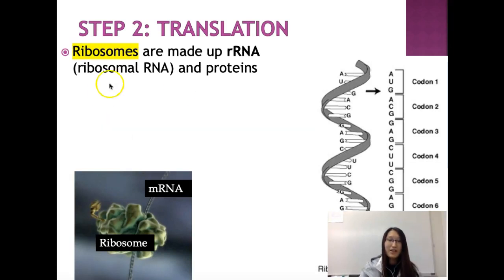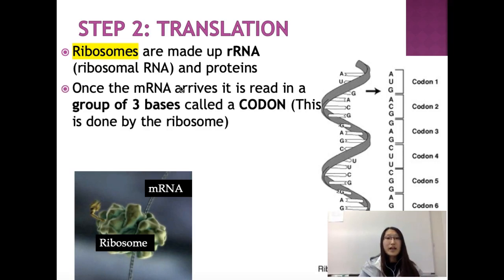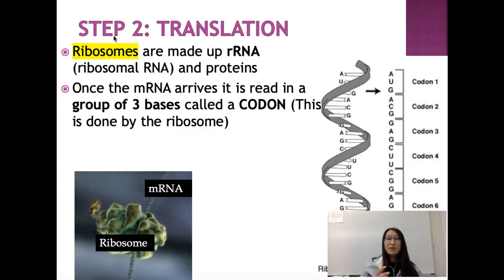Translation happens at the ribosome, and the ribosome has a piece of it called rRNA — ribosomal RNA. The rRNA is an accessory of the ribosome that allows it to actually function. When the mRNA is at the ribosome, the ribosome reads the mRNA three bases at a time, and each set of three bases is called a codon.